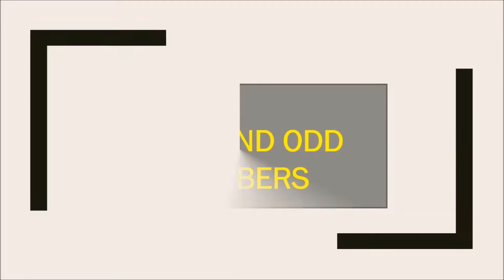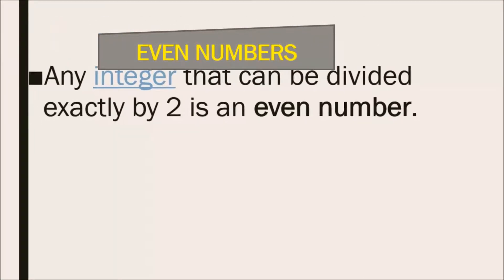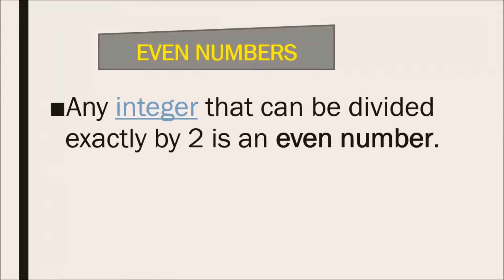Hello students, today we will learn something about even and odd numbers. So let's start with even numbers. What is an even number? Any integer that can be divided exactly by two is an even number. That is, any number which is divisible by two and there is no remainder after dividing that number is an even number.